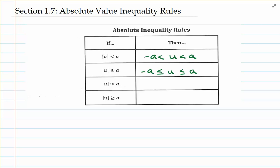For the other inequality symbols — greater than and greater than or equal to — these are both going to break up into a compound inequality. But whereas the first two split up into the AND compound inequality, the last two absolute value inequalities will split up into the OR compound inequality. I'll explain why that is in just a little bit. To say that the absolute value of an expression is greater than some positive number a really means this: